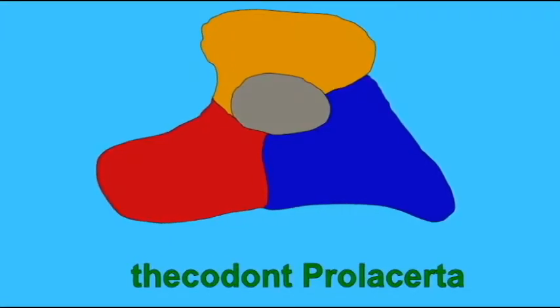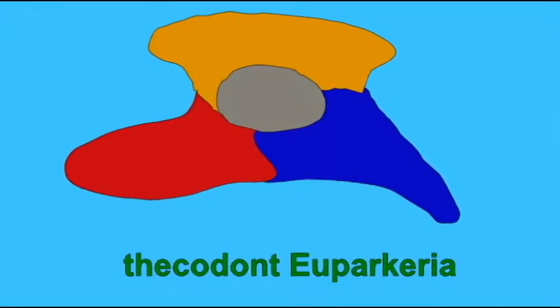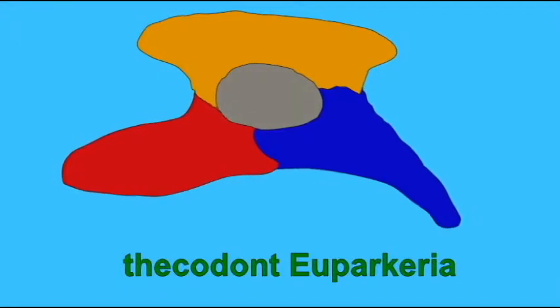The hip of early thecodonts was not like that of dinosaurs. It did not have much room for muscle attachment, and the bottom of the hip, what's known as the pubo-ischiatic plate, was flat.